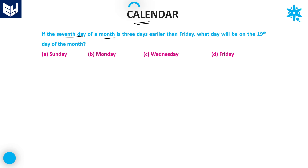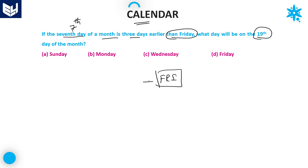If the seventh day of a month is three days earlier than Friday, what will be the 19th day of that month? The seventh day of a month is three days earlier than Friday. Let us take this is Friday — before that is Thursday, before that is Wednesday, and before that is Tuesday.